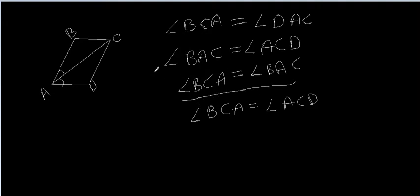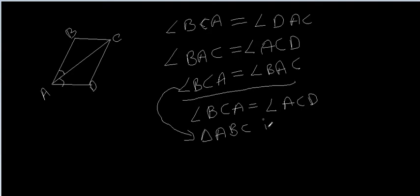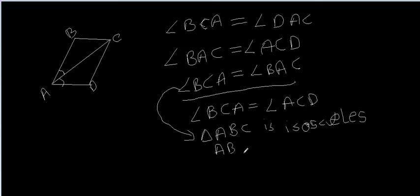From the equation angle BCA equals angle BAC, we can say that triangle ABC is isosceles. Therefore AB is equal to BC. This is a parallelogram in which AB is equal to BC, meaning the adjacent sides are equal. And if the adjacent sides are equal, it means that the quadrilateral ABCD is a rhombus, which is what we needed to prove.